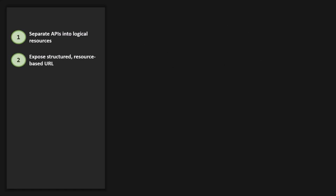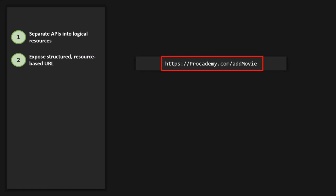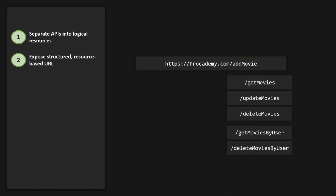These resources should then be exposed — that means they should be made available using structured resource-based URLs that the client can send requests to. For example, here we have a web address. This entire address is called a URL, and in that address, 'add movie' is called an API endpoint. So an API can have many different endpoints, like 'get movies,' 'get users,' 'add movies,' 'delete movies,' 'get reviews,' etc. Each of these endpoints will send different data back to the client or perform different actions.